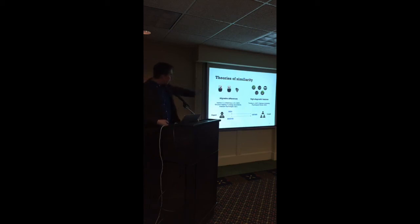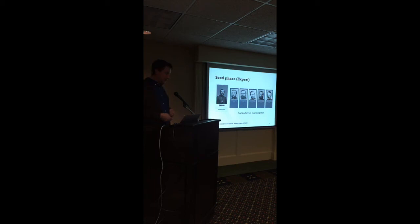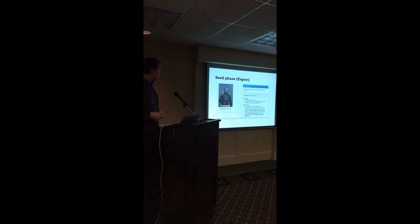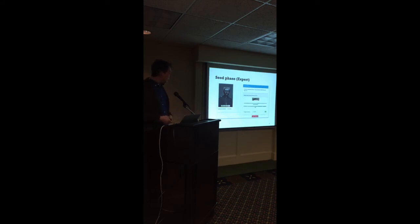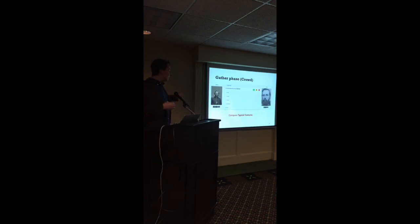We ended up creating an add-on to the site called Second Opinion that helps people define these features. It's got three phases: identify high diagnostic features in the image, ask for help from the crowd, and then analyze the results. The expert or user first looks at the image and tries to find high diagnostic features — things that make this guy stand out. For example, maybe he's got a really unique, very high forehead. We call that a high diagnostic feature. If someone doesn't have that forehead, we rule them out. Then we send that out to lots of other people who look at two images and decide whether it's the same guy by going through specific categories: same facial hair? Same hair? Same eyes? Et cetera.